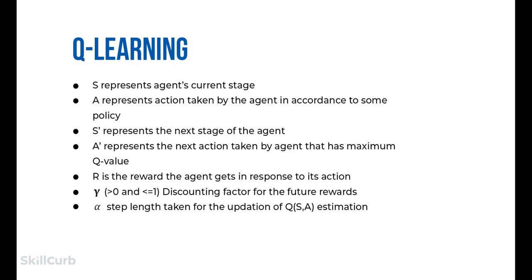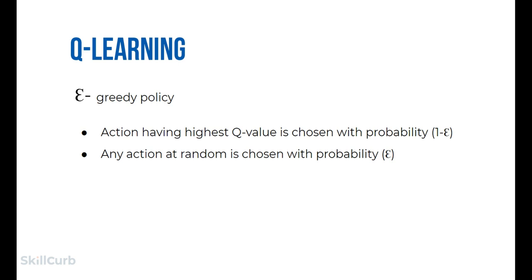The individual representations in the temporal difference formula are: S (the agent's current state), A (action taken by the agent according to some policy), S' (the next state of the agent), A' (the next action taken by the agent with maximum Q value), R (the reward the agent receives in response to its action), gamma (ranging from 0 to 1, the discounting factor for future rewards), and alpha (the step length taken for the update of the Q(S,A) estimation). The greedy policy chooses actions with the highest Q value with probability 1−ε, and any action at random with probability ε.